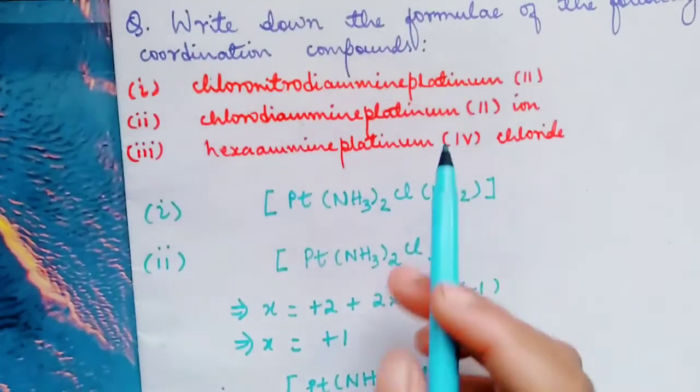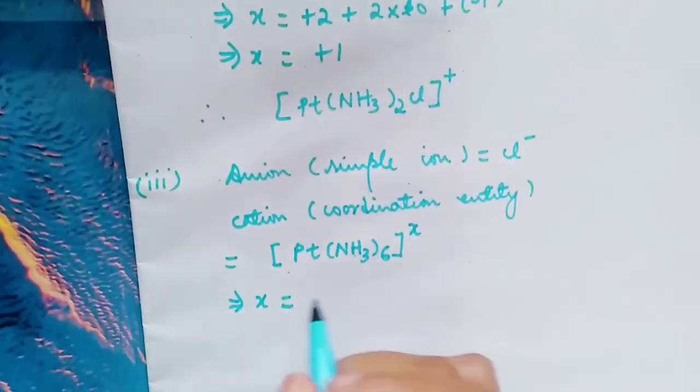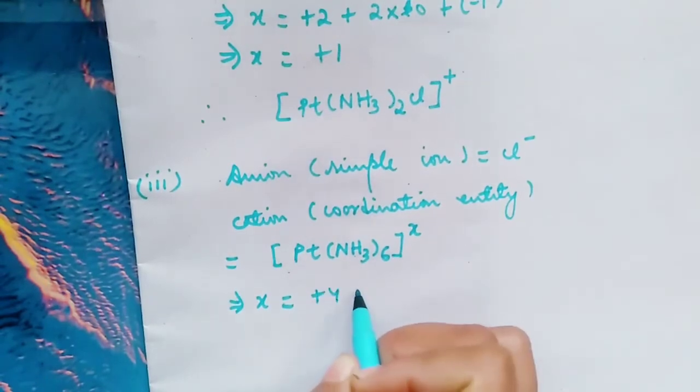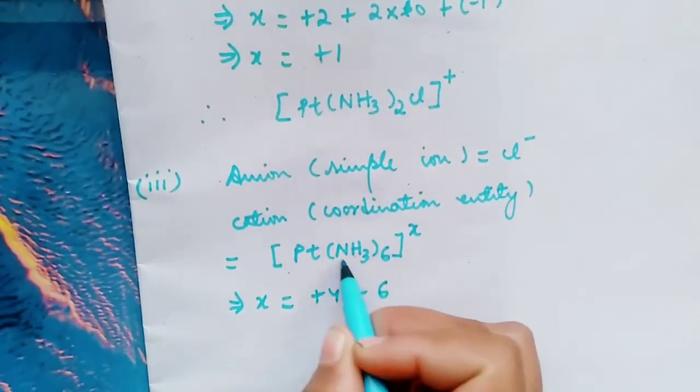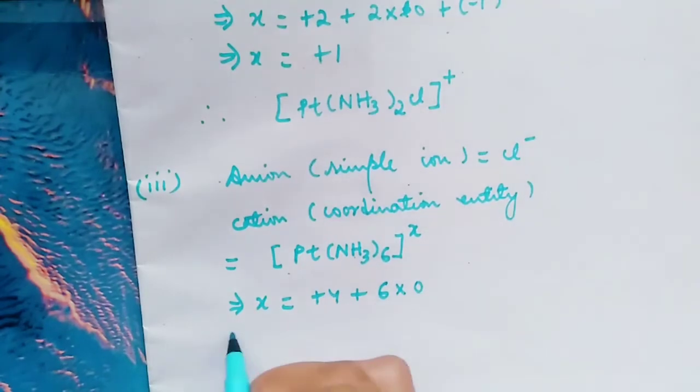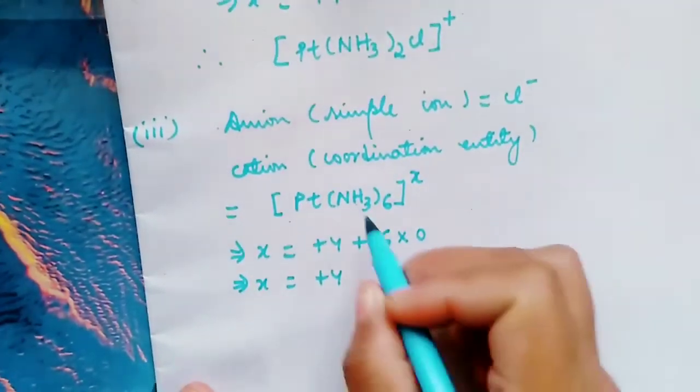It is 4, +4, plus 6 times the charge carried by NH3, which is 0. So our X is +4. Hence we have +4.